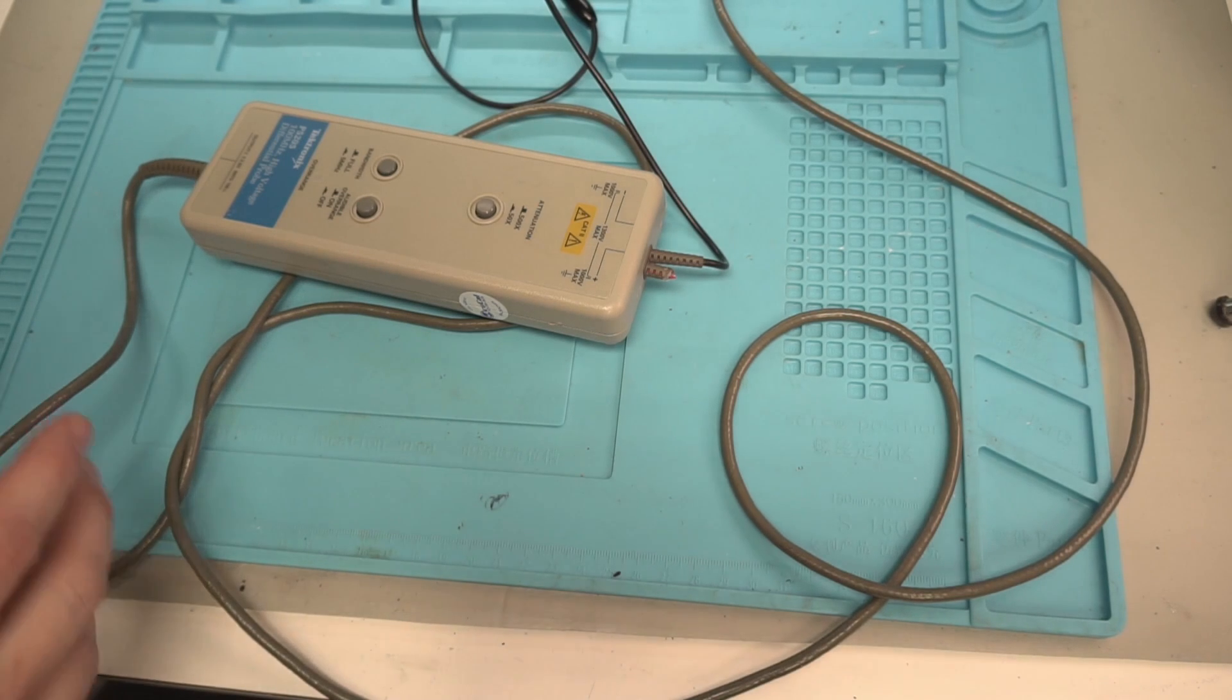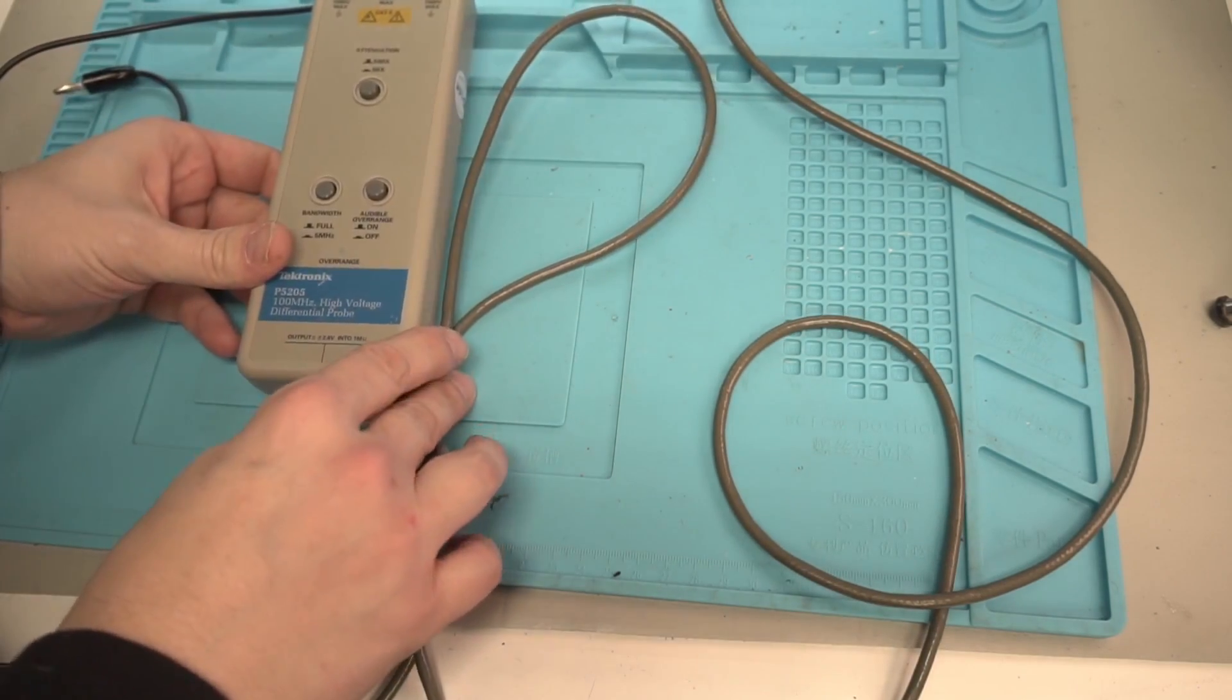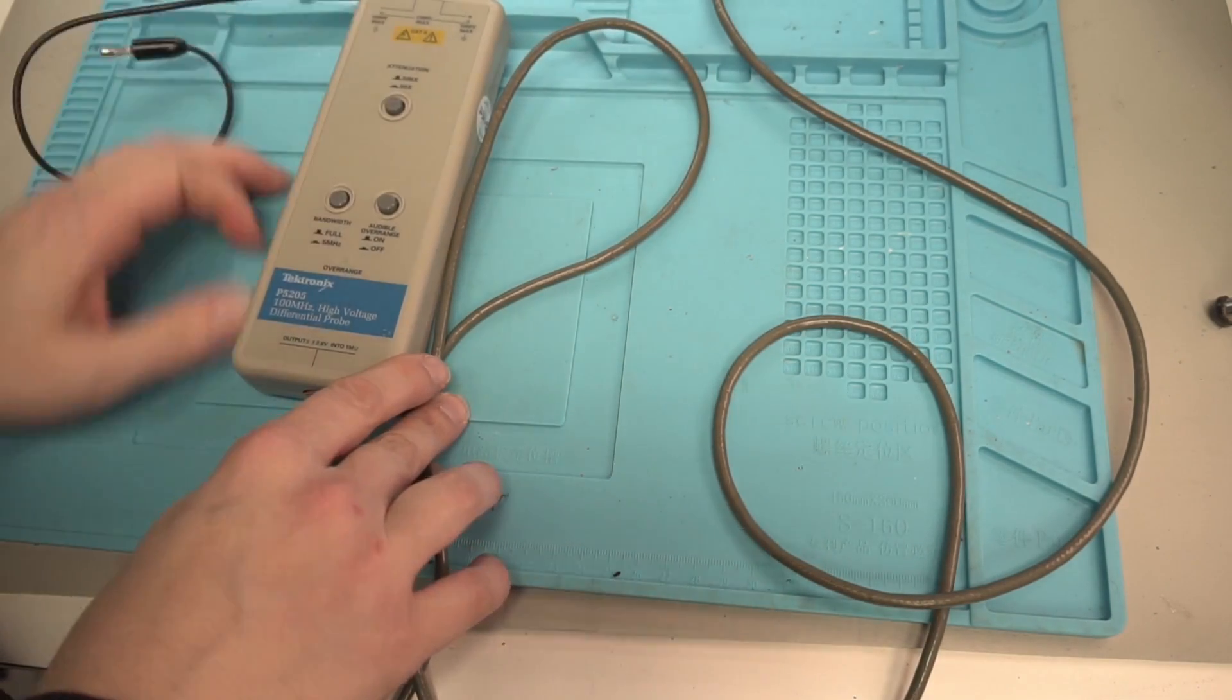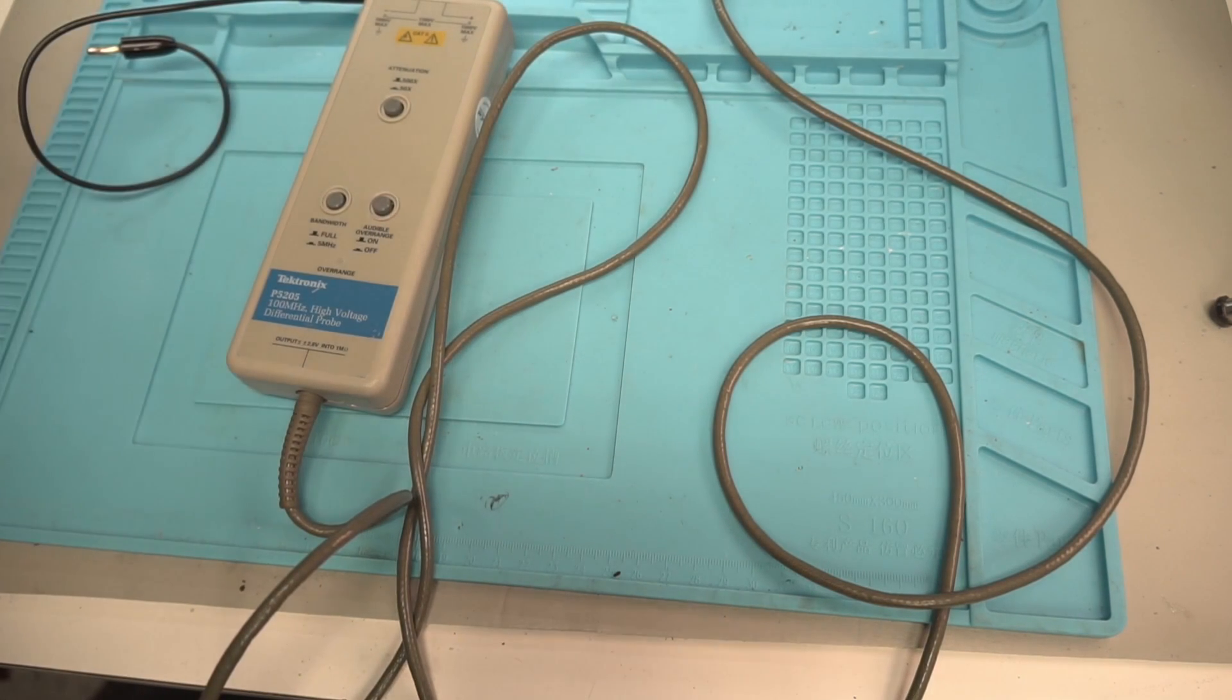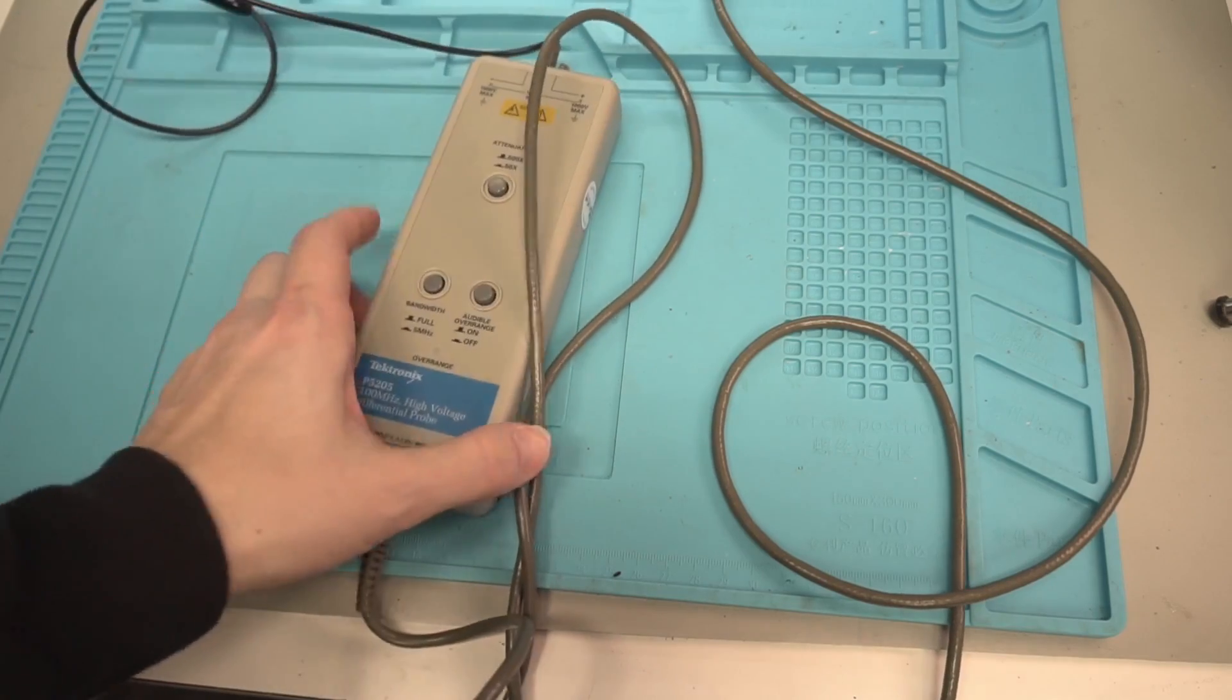Before we actually start tearing into this thing, let's take a quick look at it and get an idea of what we're working on today. So this diff probe has a maximum of 1,300 volt input and it's a high voltage 100 megahertz differential probe. They're made by Tektronix.